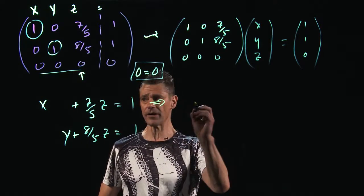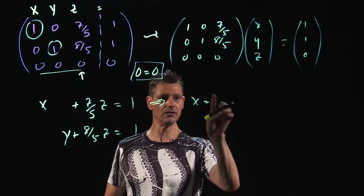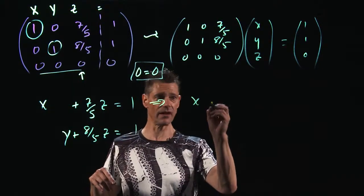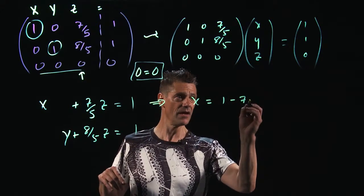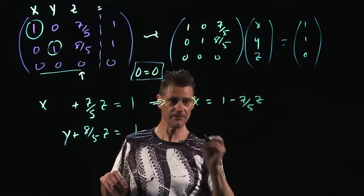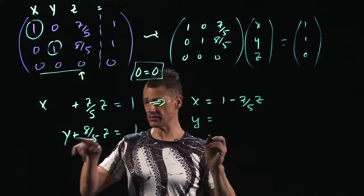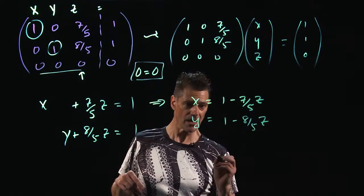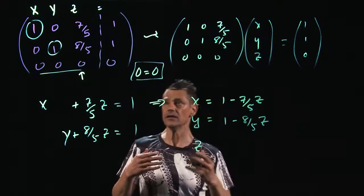If we solve out for x, we have x is equal to, oh, that's not a very attractive equal. We'll subtract 7 fifths z from both sides. So x is equal to 1 minus 7 fifths z. Y is equal to 1 minus 8 fifths z. And z didn't show up.